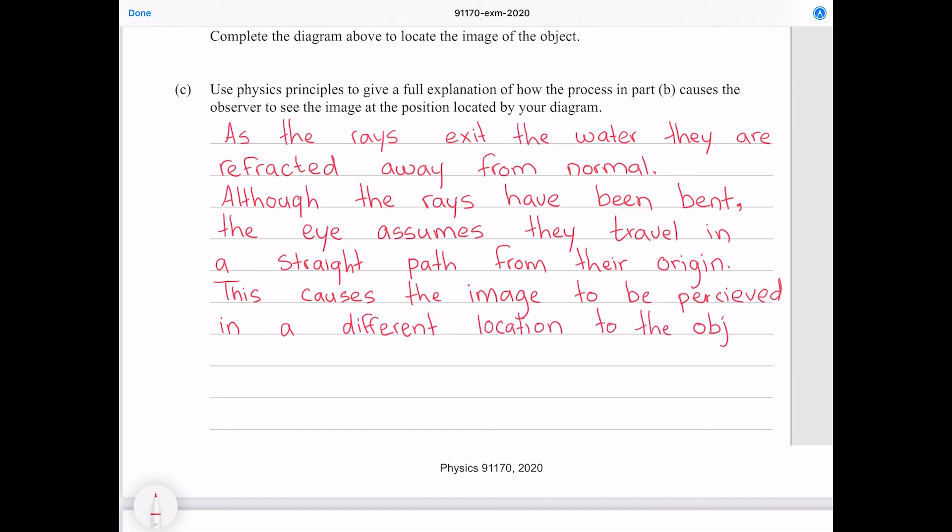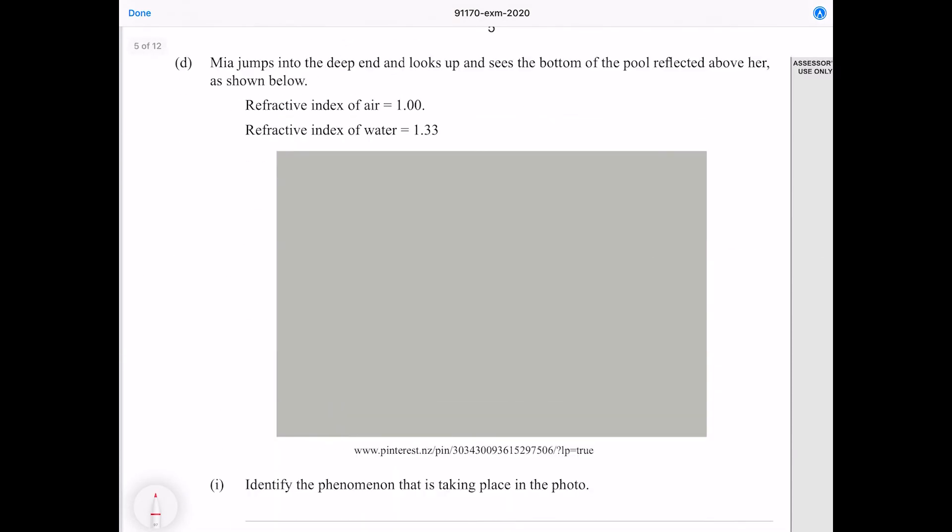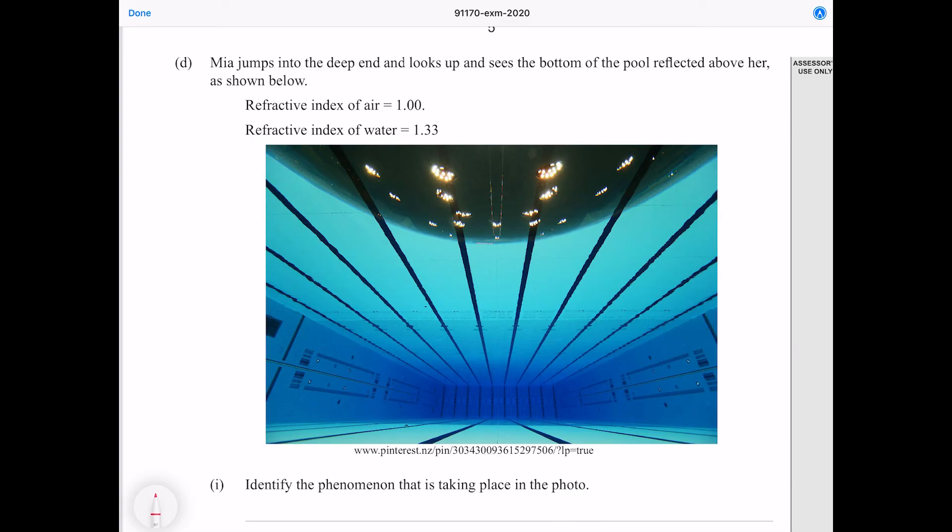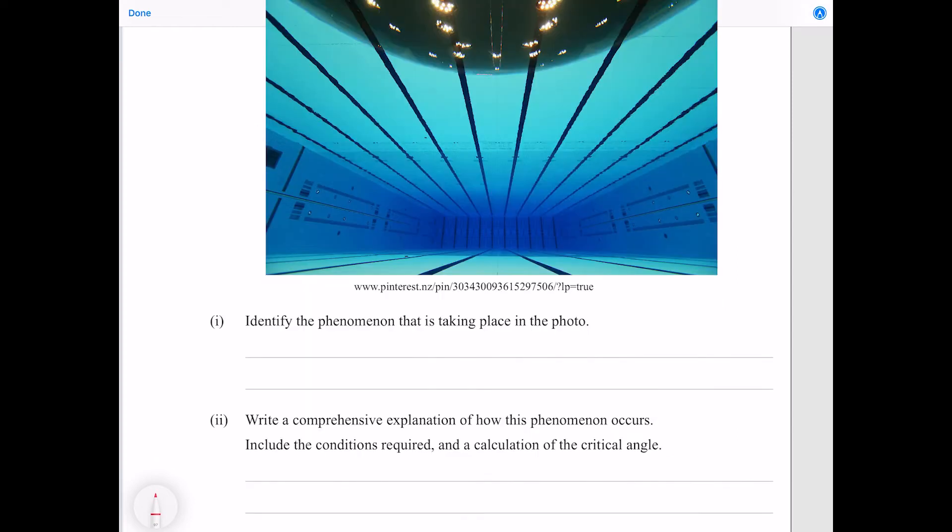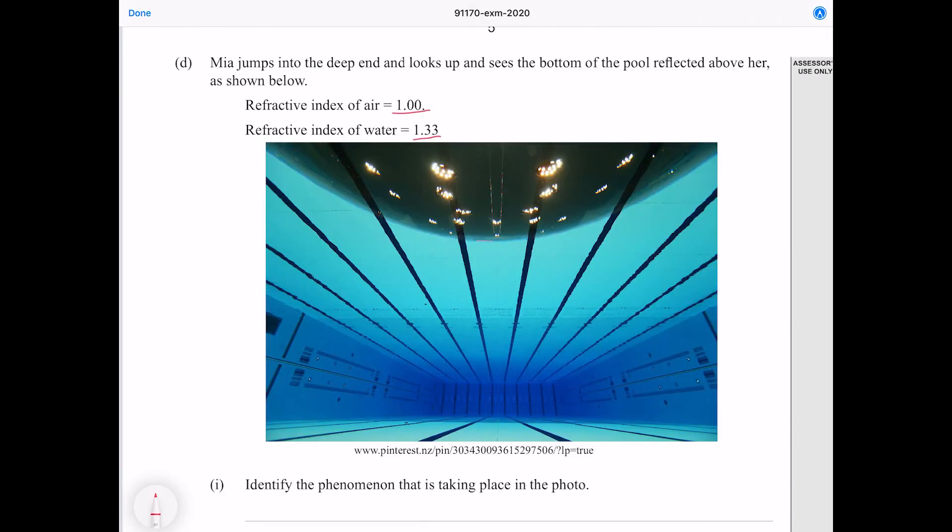Mia jumps into the deep end and looks up and sees the bottom of the pool reflected above her. We're given the refractive index of air and also the refractive index of the water. Identify the phenomenon that is taking place in the photo. Well although I can't currently see what the image is, though you can, the fact that we're seeing a reflection of the bottom of the pool although we're looking up means that we're talking about total internal reflection.